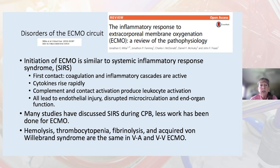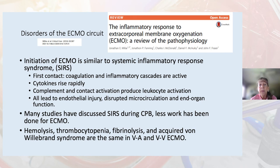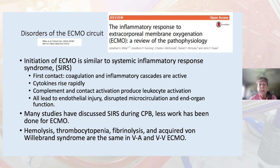Disorders of the ECMO circuit must be briefly addressed. Initiation of ECMO is similar to systemic inflammatory response syndrome. Contact activation and coagulation and inflammatory cascades begin to activate, and cytokines rise rapidly. Complement and contact activation produce leukocyte activation, all of which can lead to endothelial injury, disrupted microcirculation, and end organ dysfunction. Many studies have discussed SIRS during cardiopulmonary bypass, but less work has been done for ECMO. In addition, hemolysis, thrombocytopenia, fibrinolysis, and acquired von Willebrand syndrome were found to be similar in VA and VV ECMO.